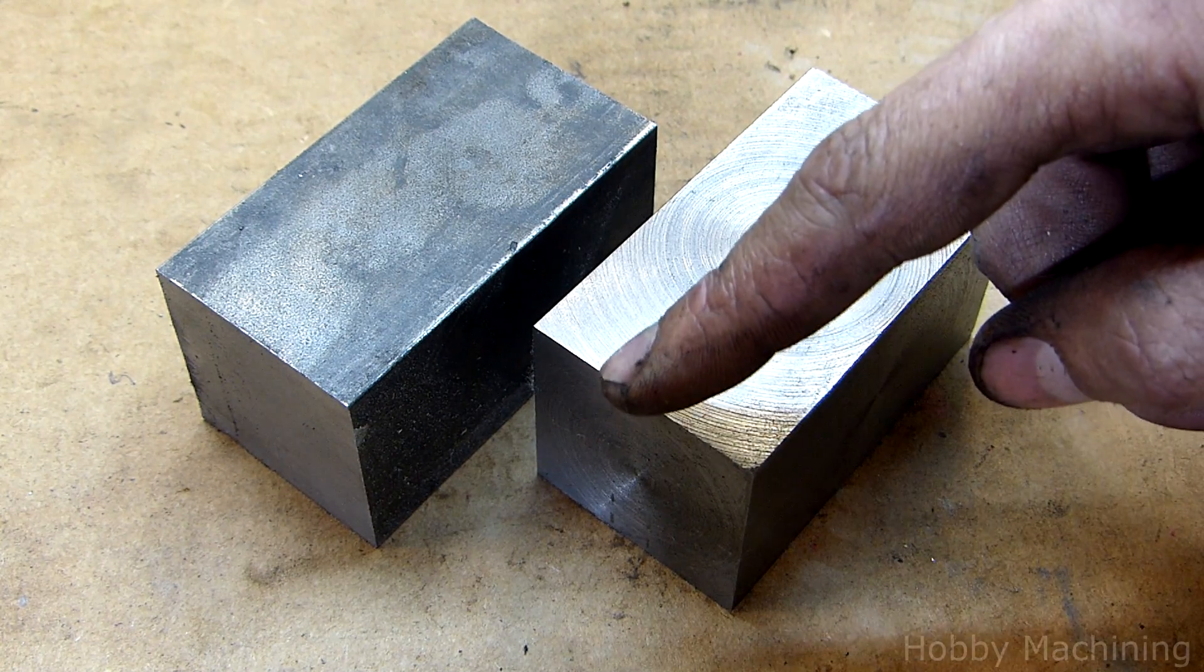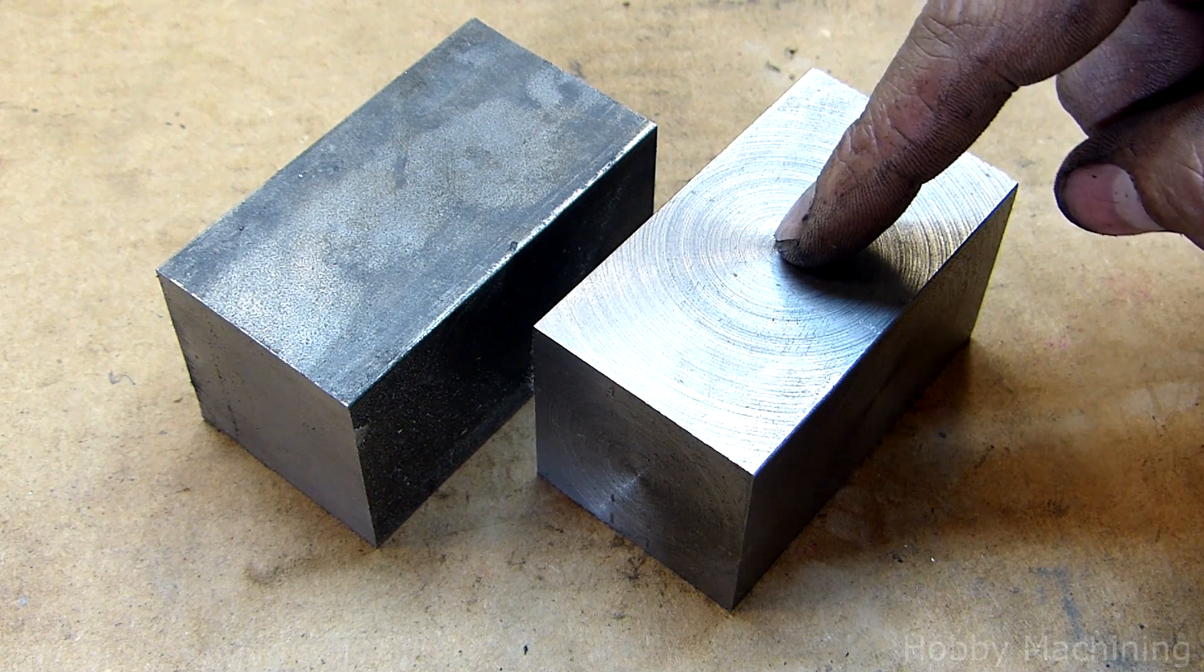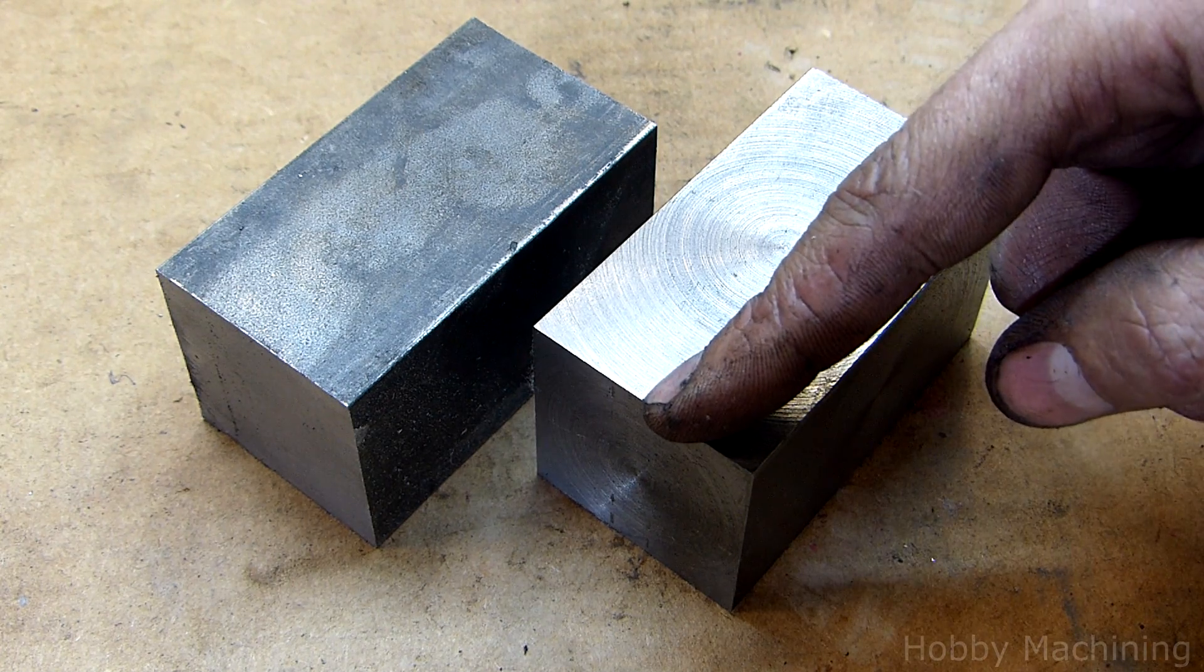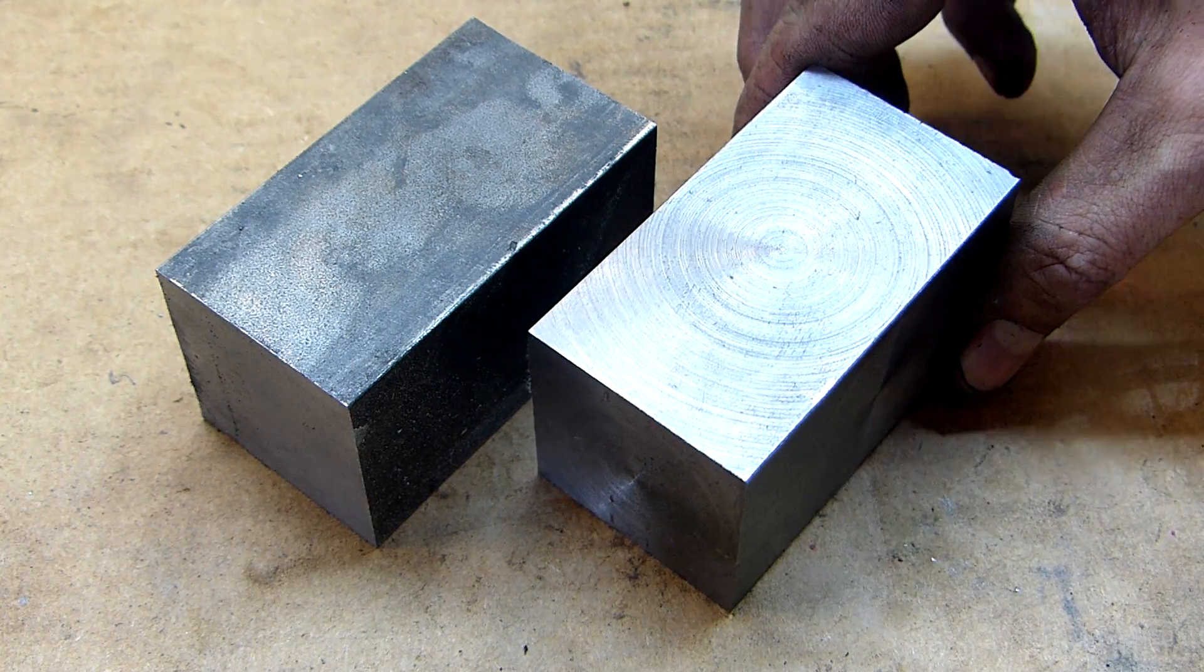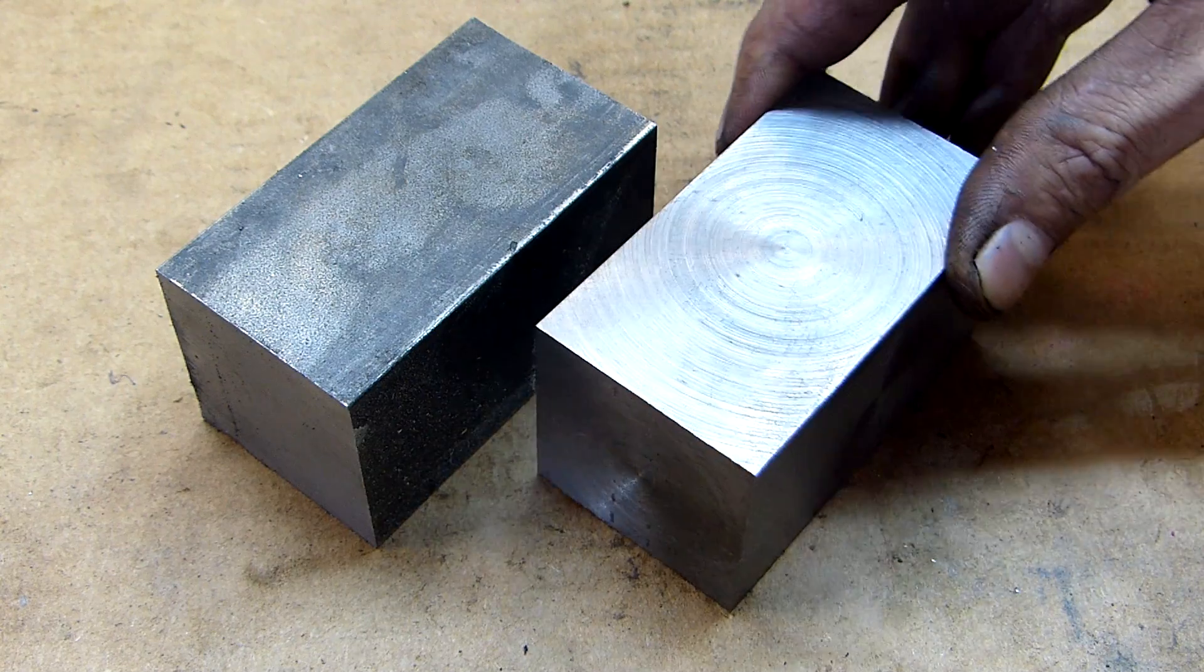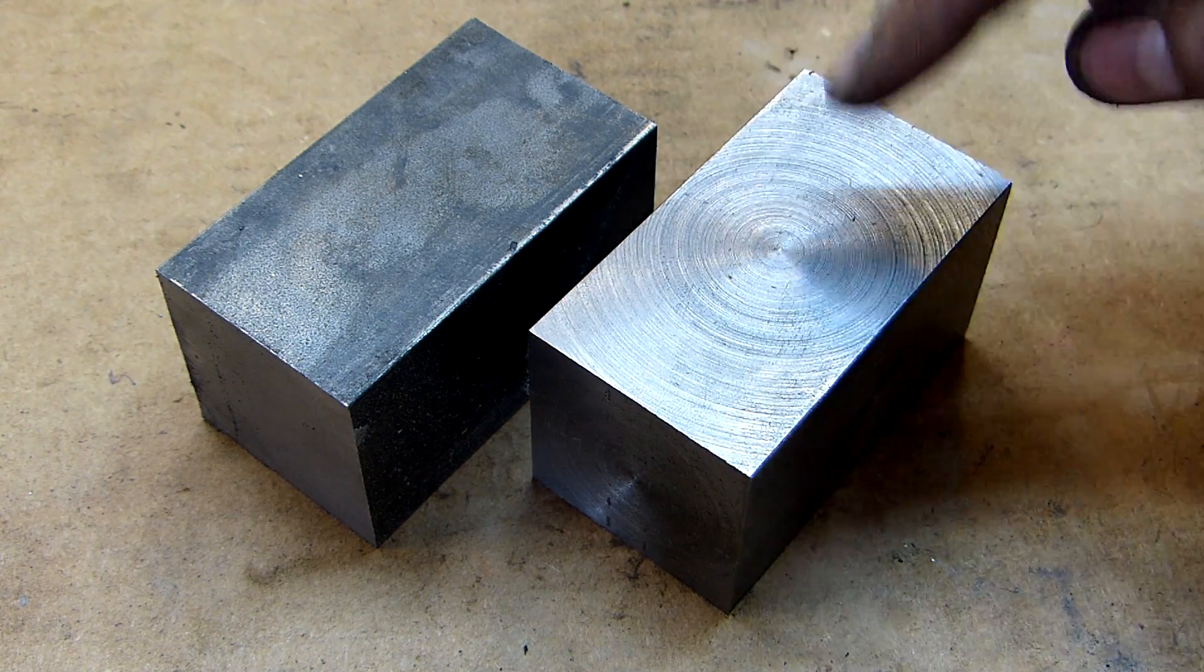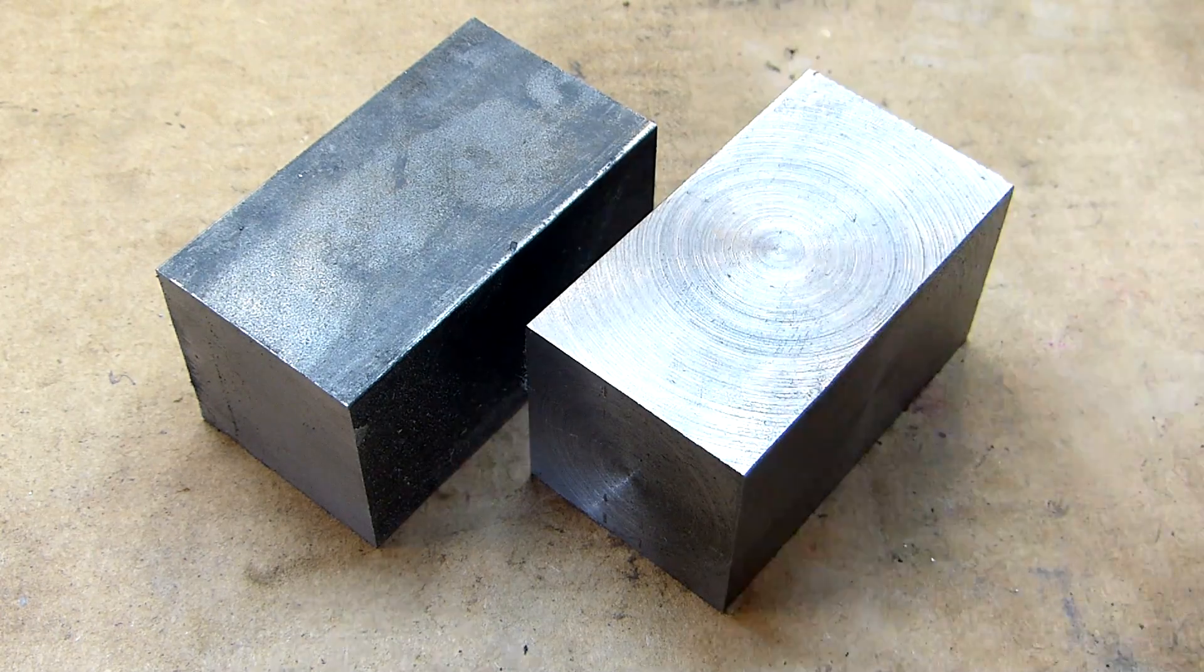So ideally we'd have slower RPMs out here, faster RPMs here. But on my lathe it's kind of hard to change speeds while you're cutting. So something like this might be better done on the milling machine, but I wanted to give it a go on the lathe and here we are. I think it turned out pretty good.